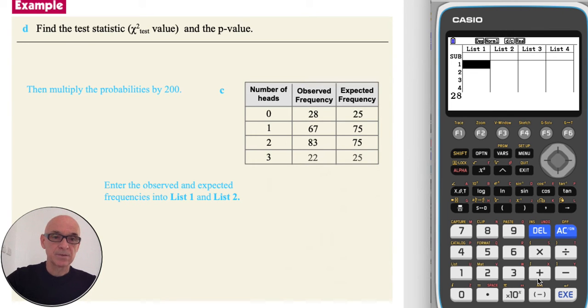Now I'm ready to enter the observed frequencies in list 1. So that's 28, 83, and 22, the observed outcomes.